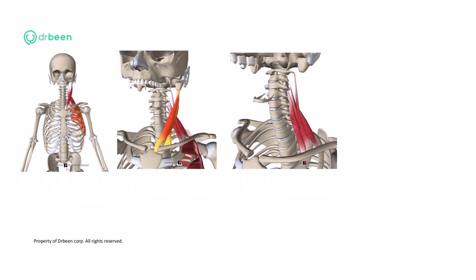Here are the scalenei. They are attached to the first and second rib and they anchor and fix them so that when the external intercostals contract, they move the ribs up instead of pulling them down.